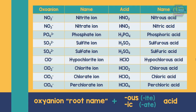Naming an acid is easy because you just need to know the anion and then follow its corresponding structure. That's it — that is all for now. I hope you learned something today. Once again, this is Easy Engineering.